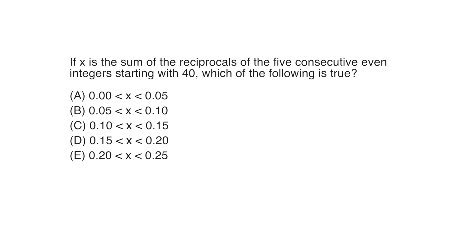Okay, we need the sum of the reciprocals of the five consecutive even integers starting with 40. So that's 1 over 40 plus 1 over 42 plus 1 over 44 plus 1 over 46 plus 1 over 48. If you're thinking mechanically, you might try adding these together by finding a common denominator or doing some long division, but you'll realize pretty quickly that it would be a nightmare to add these things together using brute force.